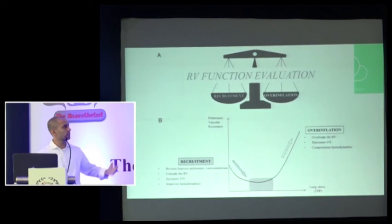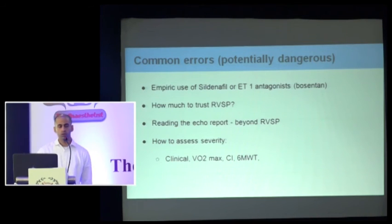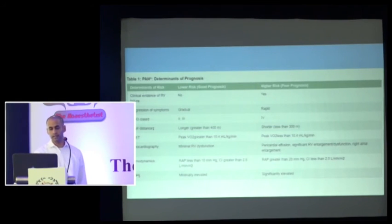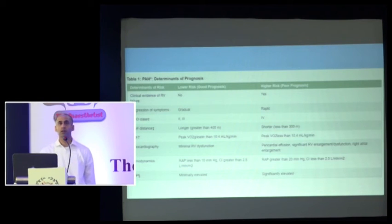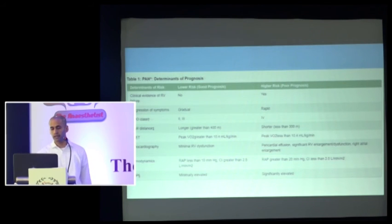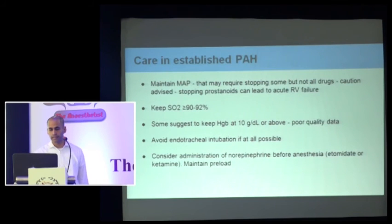RV functional evaluation is a balance — you have to balance recruitment against overinflation. A few ground rules: don't start sildenafil and ET1 antagonists off the front just based on RVSP — look at the function first. Be careful about PH-specific drugs. When assessing severity beyond the echo, note that RVSP is nowhere in the severity list. Nobody at a center that specializes in PH looks at RVSP. Functional outcome matters — the six-minute walk test is cheap and gives you good risk stratification. RA pressure via a central line is another accessible marker.